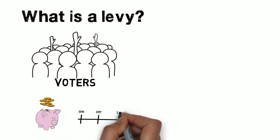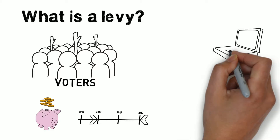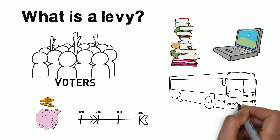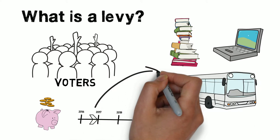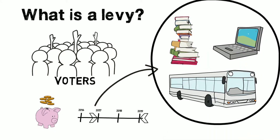What is a levy? A levy is a ballot measure asking voters to agree to a property tax that would collect a set dollar amount for a specific number of years. Levy money is used for operational costs or capital improvements, like computers, curriculum, or buses. The local levy bridges the gap between state funding and the true cost of operating a school district.